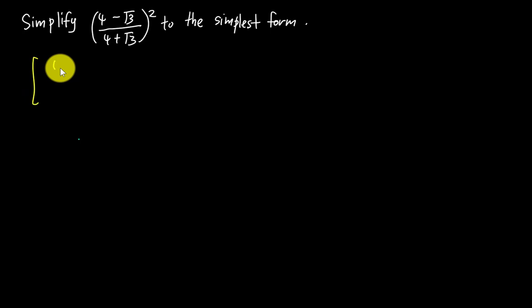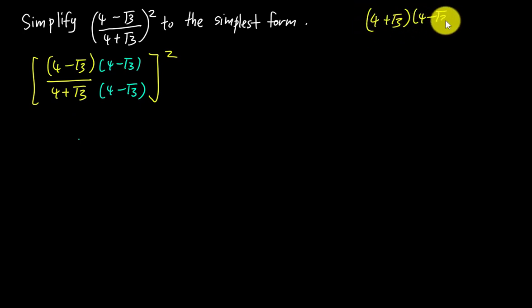We have (4 - √3) over (4 + √3). What we want to do is rationalize first, so we multiply (a + b) by (a - b), and multiply (a - b) here as well. Then we have the whole thing with a bracket squared. We do (a + b) multiply (a - b) because the process is called rationalizing, and we want to get a² - b². So (a + b)(a - b) gives us a² - b².